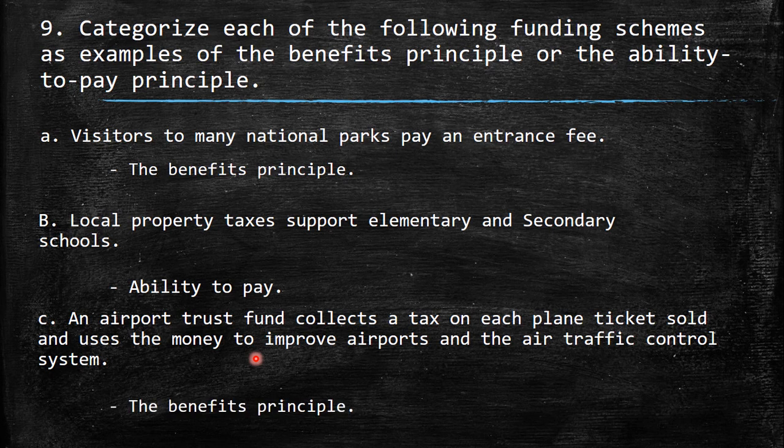The last one: an airport trust fund collects a tax on each plane ticket sold and uses the money to improve airports and air traffic control. Definitely, the benefits principle — because the income from this tax is going to be invested or spent in the same field.